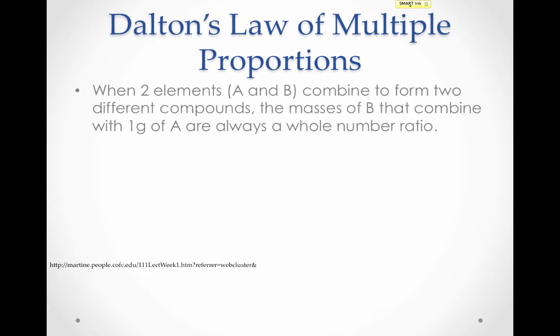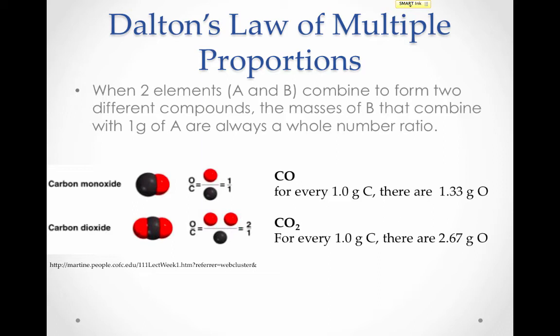Let's look at an example. He noticed that if you look at carbon monoxide, which is a compound using carbon and oxygen, and compare that to carbon dioxide, a compound containing carbon and oxygen again, if you look at their masses, for every one gram of carbon in carbon monoxide there was 1.33 grams of oxygen. For every one gram of carbon in carbon dioxide, there was 2.67 grams of oxygen. If you look at the ratio of 2.67 to 1.33, we get a whole number ratio.